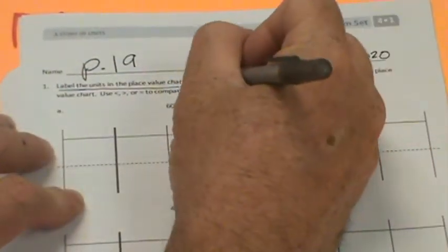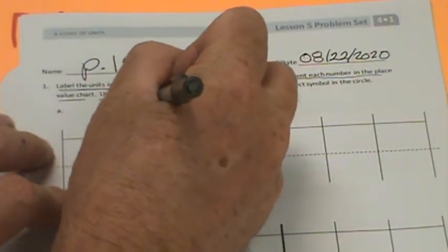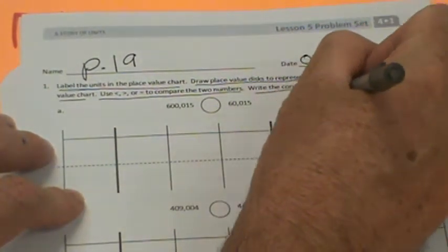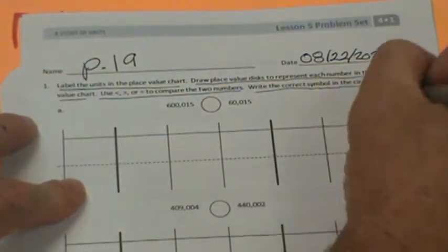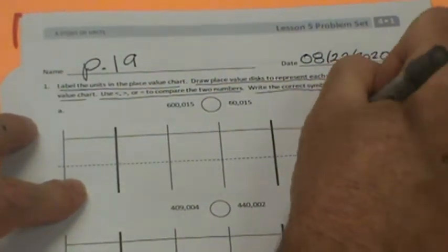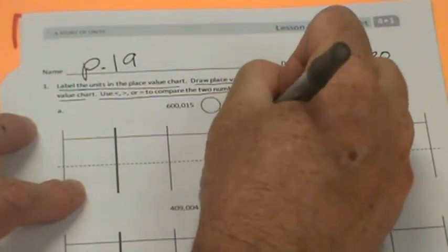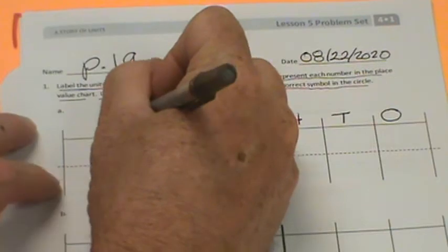So let's number our place value chart first. Zero, ten, hundredths, thousands, ten thousands, hundred thousands, millions.